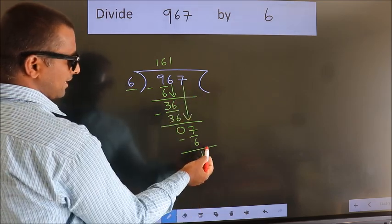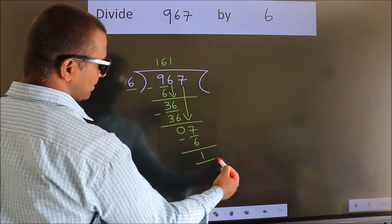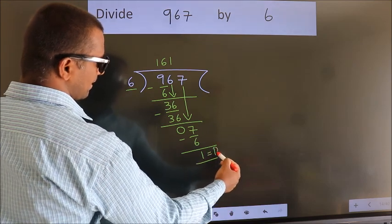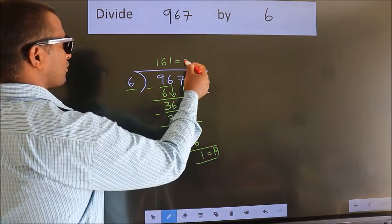No more numbers to bring it down. So, we stop here. This is our remainder. This is our quotient.